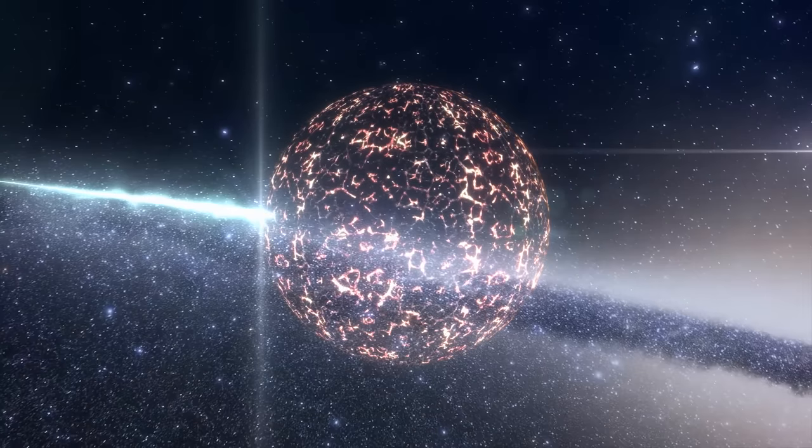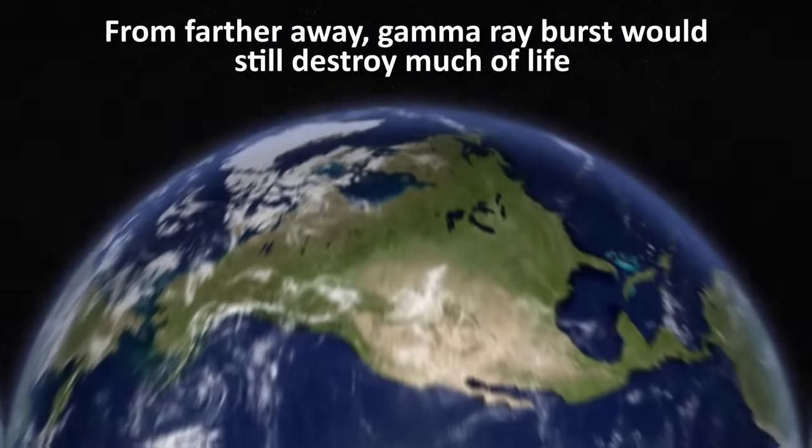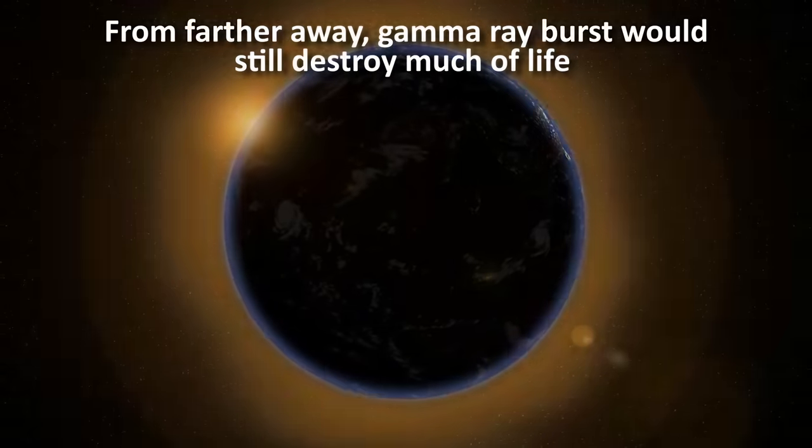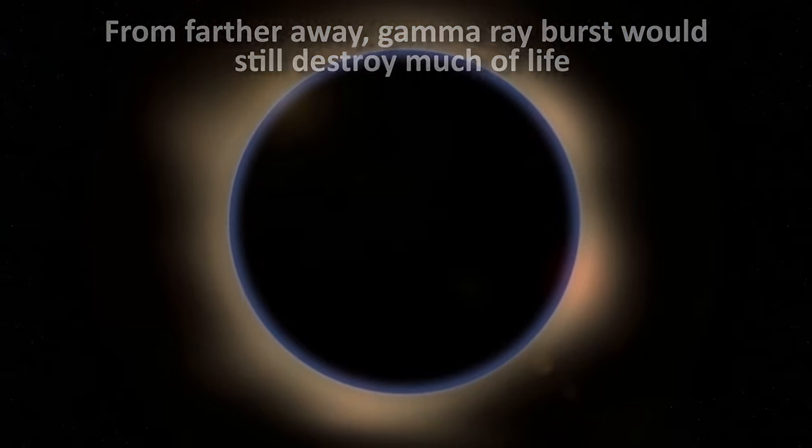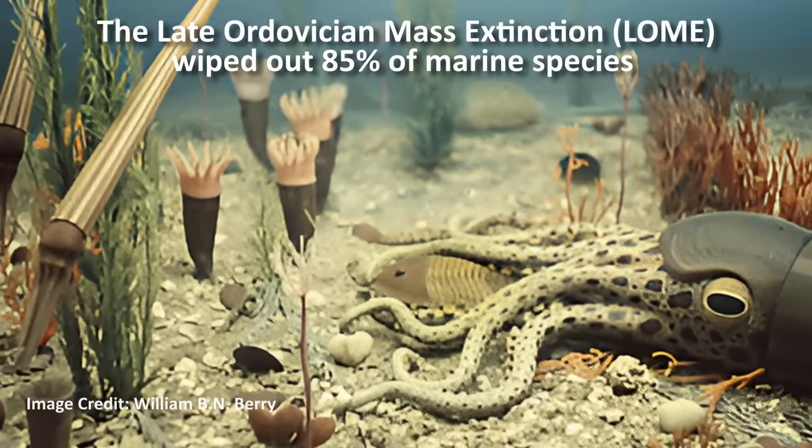But even at greater distances, from within our own galaxy, on the order of a thousand or more light years away, it would still sterilize life on the side of Earth pointed towards the burst. Such a burst is believed to have caused a mass extinction on Earth about 443 million years ago.